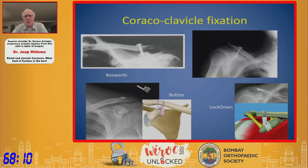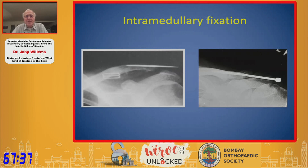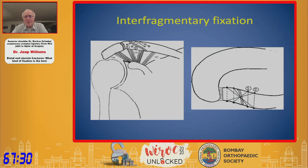Some older techniques include the Bosworth screw, cerclage, K-wires, and more recently buttons or the lockdown device. Here is an example where a button is combined with a tendon so that if the button wears out, the tendon will replace the CC ligaments if they are torn. Whether this additional stabilization is needed when you repair the fracture is our question. Intramedullary fixation is outdated. Interfragmentary suturing is a very elegant way to treat fractures and can be done arthroscopically — as Marcus showed — without requiring implant removal.